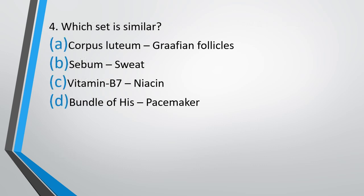Question number 4. Which set is similar? Option A: corpus luteum and Graafian follicle; option B: sebum and sweat; option C: vitamin B7 and niacin; option D: bundle of His and pacemaker. The correct answer is option A — corpus luteum and Graafian follicle.